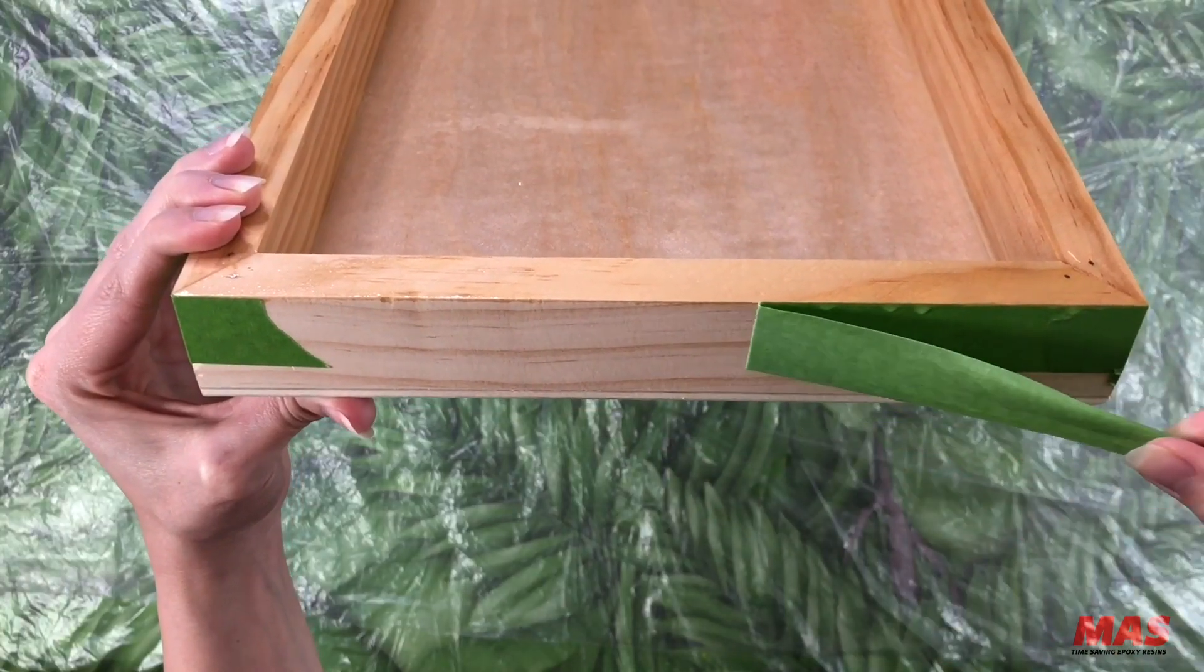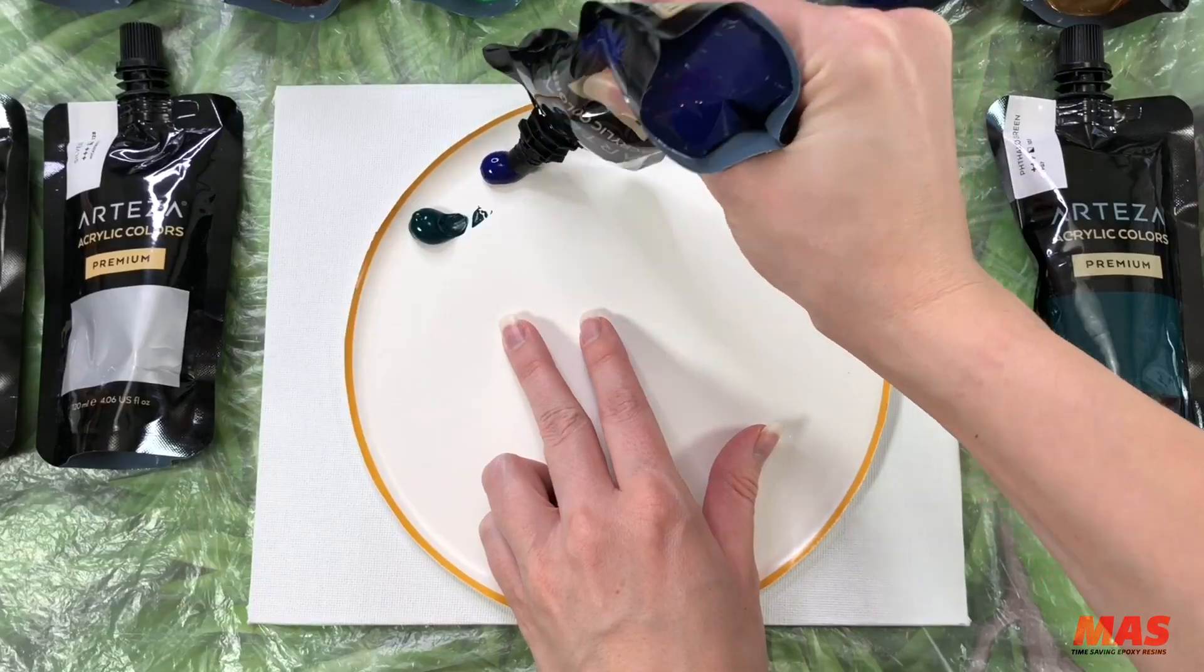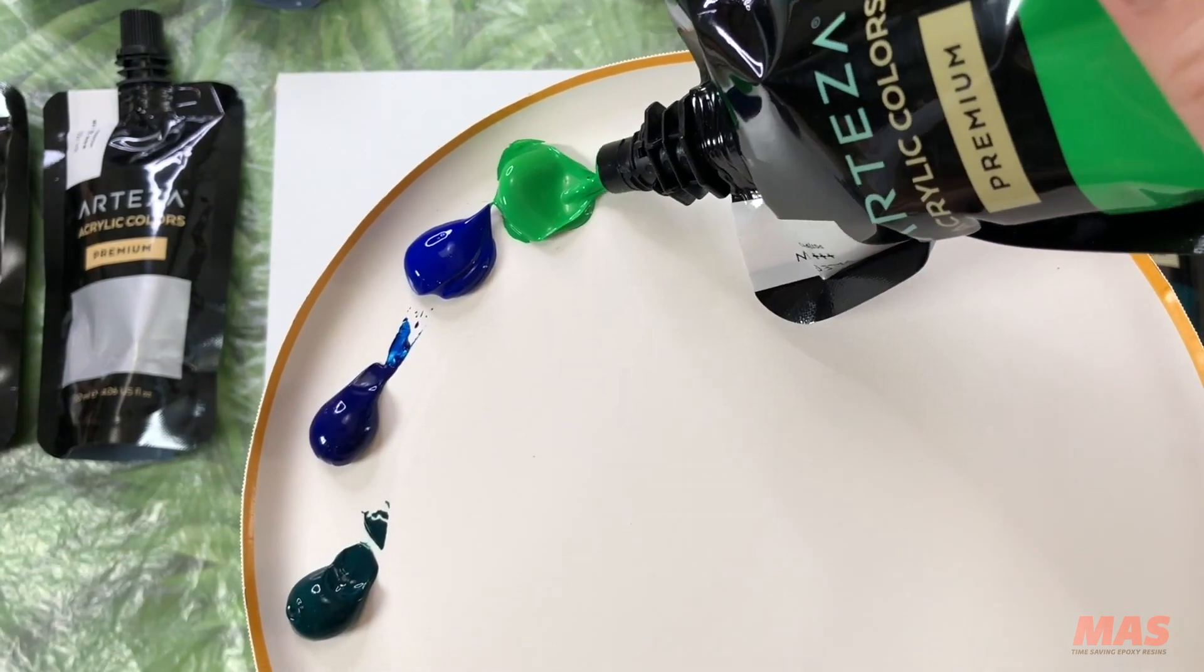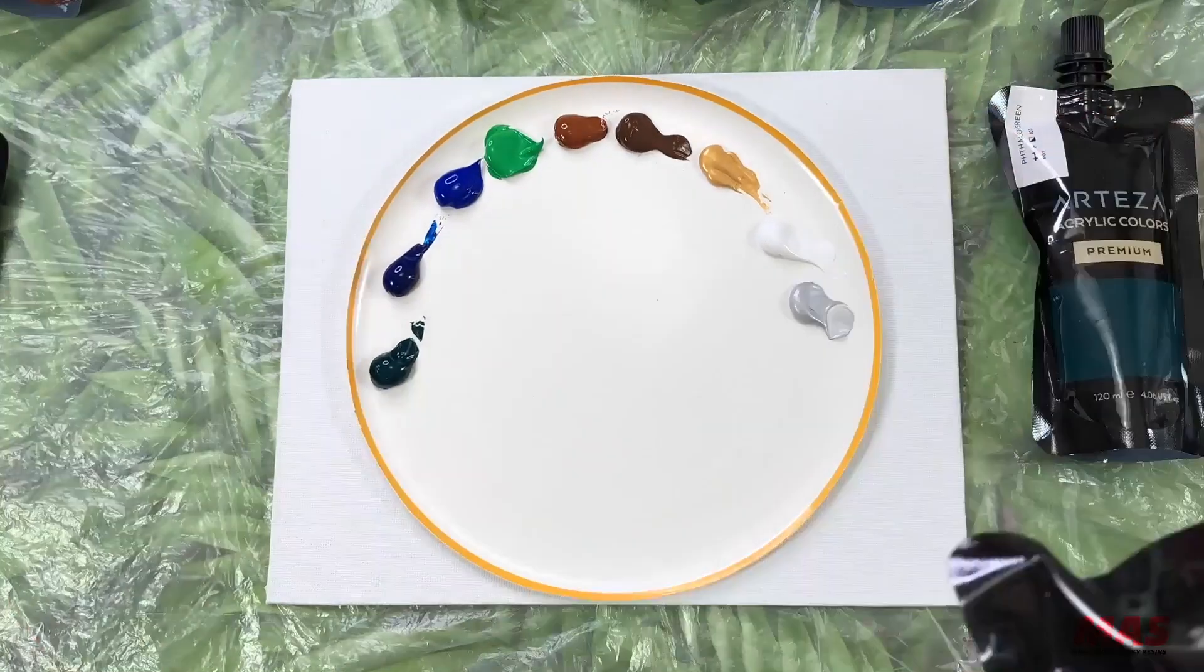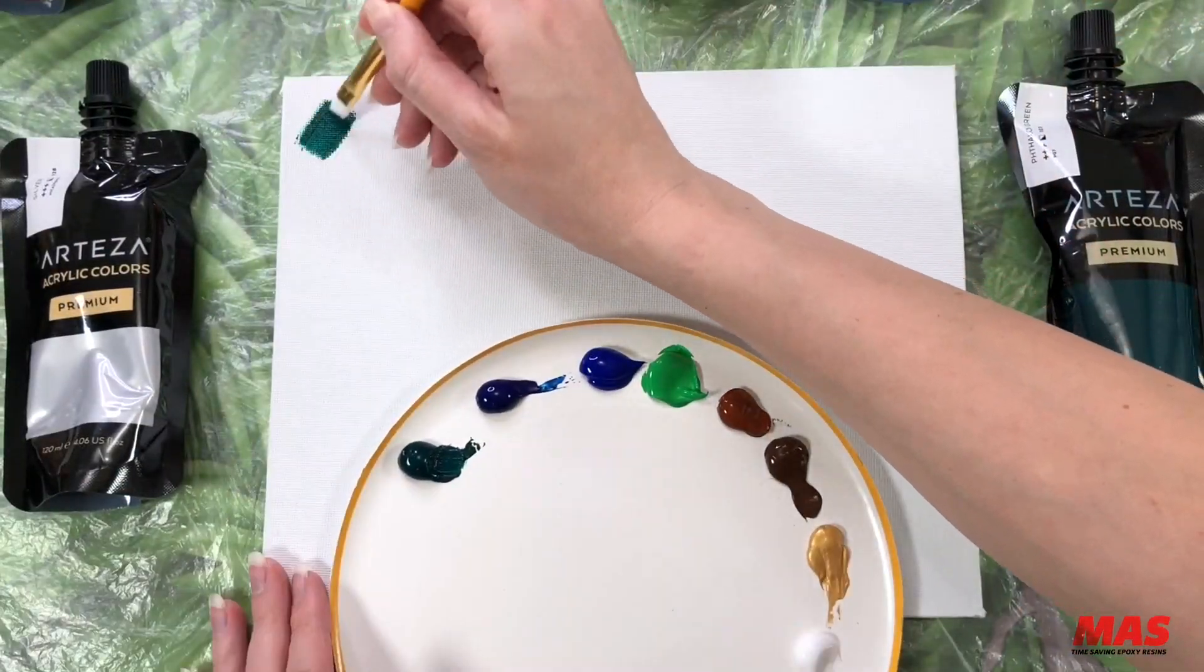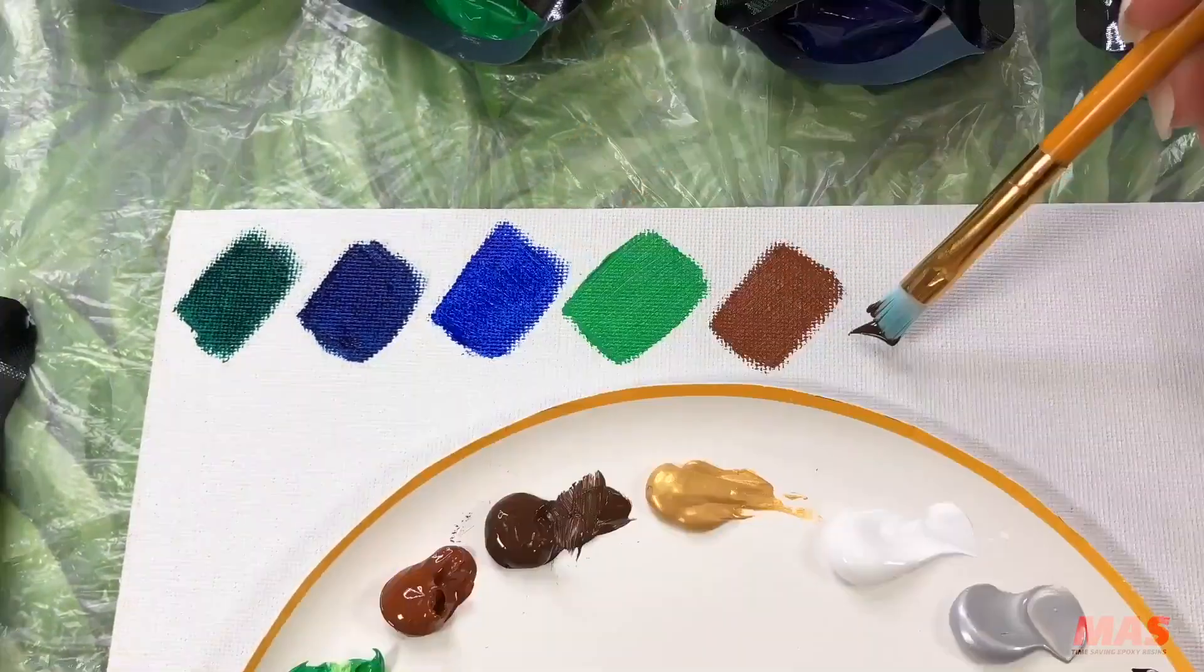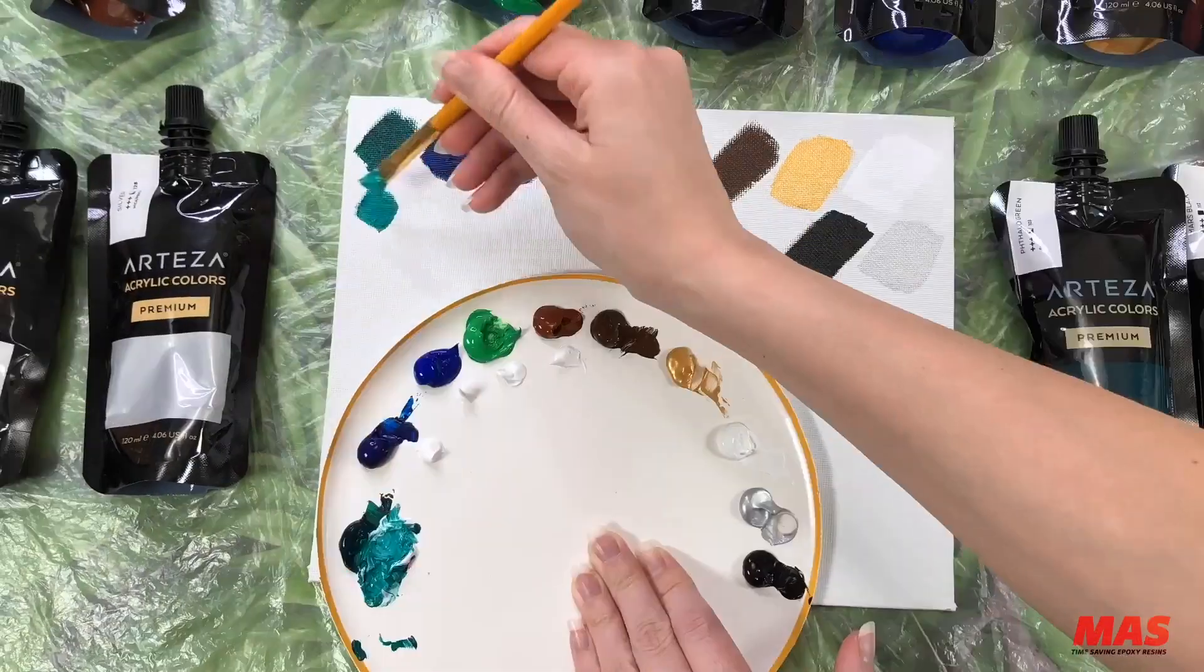Once the epoxy has cured remove that tape and let's get ready to swatch some paint colors. For this project I'm using the Arteza premium acrylic colors. Now I always swatch my colors before painting. Since acrylic paints usually dry darker than they appear in the tube this is a great way to figure out what colors are actually going to work for your particular project.